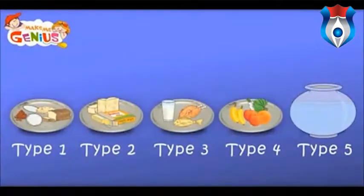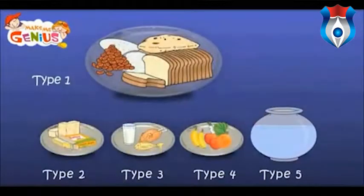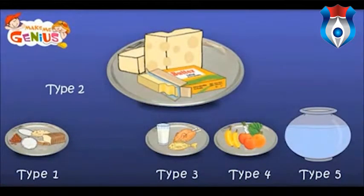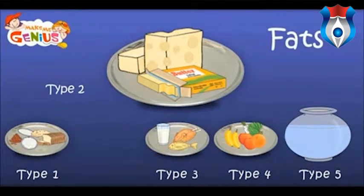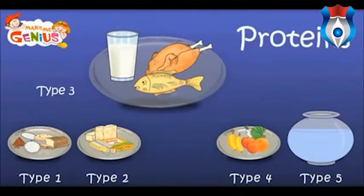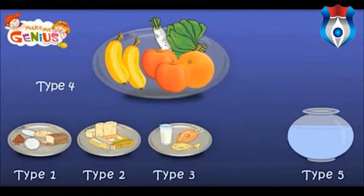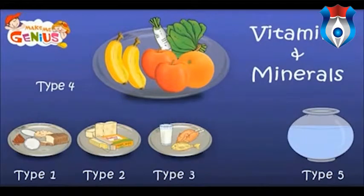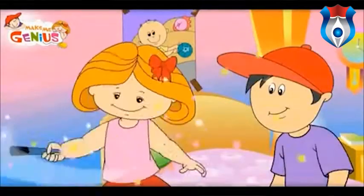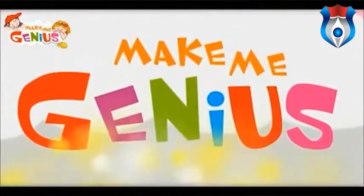We can divide food into five types. The first type is cereals, which are called carbohydrates. The second is butter and fats. Next comes fish and milk, which contain proteins. Then there are fruits, which provide vitamins and minerals. And finally there is water.